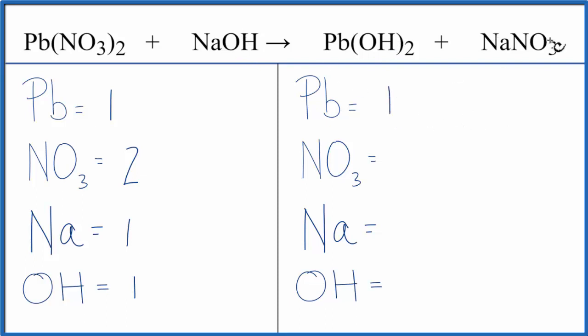On the product side, we have 1 Pb, 1 nitrate, sodiums we have 1, and then hydroxides we have 2 times the 1, we have 2 hydroxides.